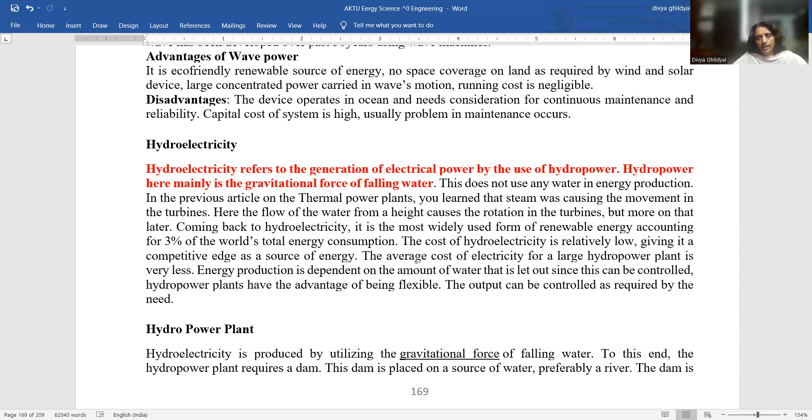Hydroelectricity. This has been asked in the AKTU exam. Hydro means water. And hydro basically is not related to boiling water, it is using the concept of gravitational force of the falling water, MGH. Hydroelectricity refers to the generation of electric power by the use of hydropower. Hydropower mainly is the gravitational force of the falling water.